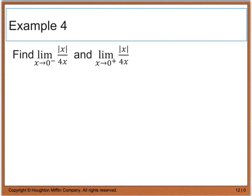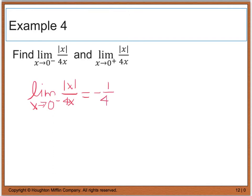For example 4, it says we want to find the limit as x approaches 0 from the left of the absolute value of x divided by 4x, and we want to find the limit as x approaches 0 from the right of the absolute value of x divided by 4x. I think the best way to do this is to go ahead and graph this on your calculator, so you may want to pause the video for a second. When we evaluate the limit as x approaches 0 from the left of the absolute value of x divided by 4x, we get negative 1 fourth.